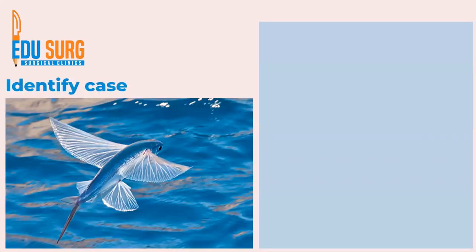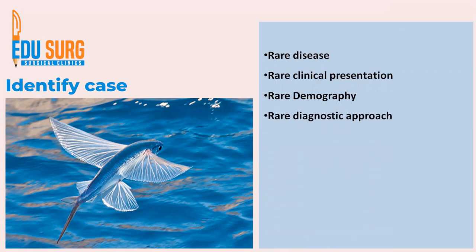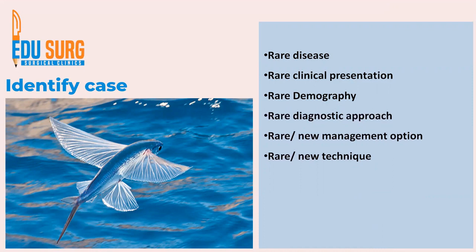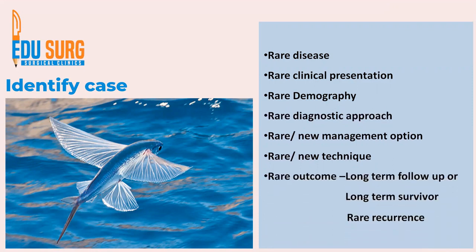Here you can see a flying fish — that is definitely a case report. It can be a rare disease, a rare clinical presentation, rare demography, rare diagnostic approach, a rare or new management option, a new surgical technique, improvisation in an existing technique, or a rare outcome such as long-term follow-up, long-term survival, or rare recurrence. All these add value to existing knowledge and are suitable case report topics.